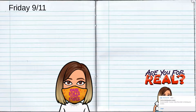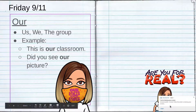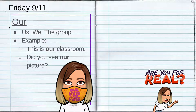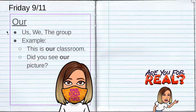So today we are talking about 'our' and 'are.' Our, O-U-R, can sometimes be pronounced as 'are.' I have kind of trained myself to say that 'ow' sound that O-U makes — 'our' — because it makes it much easier to tell the difference. But not everybody talks like that. So 'our' means us, we, or the group.